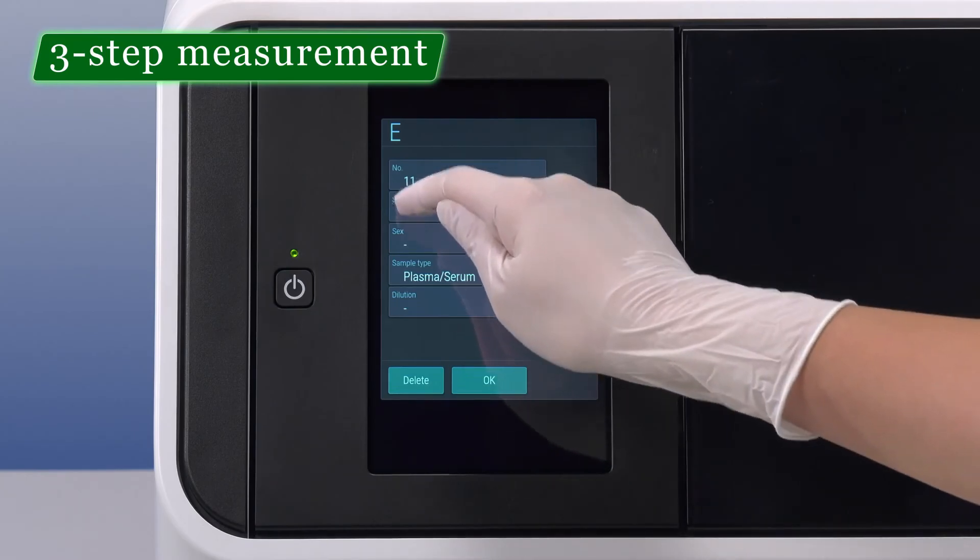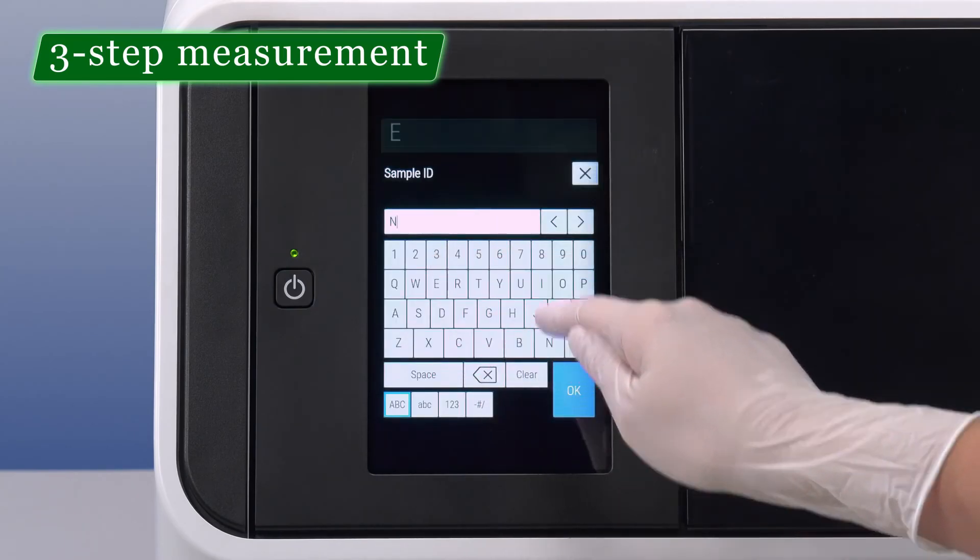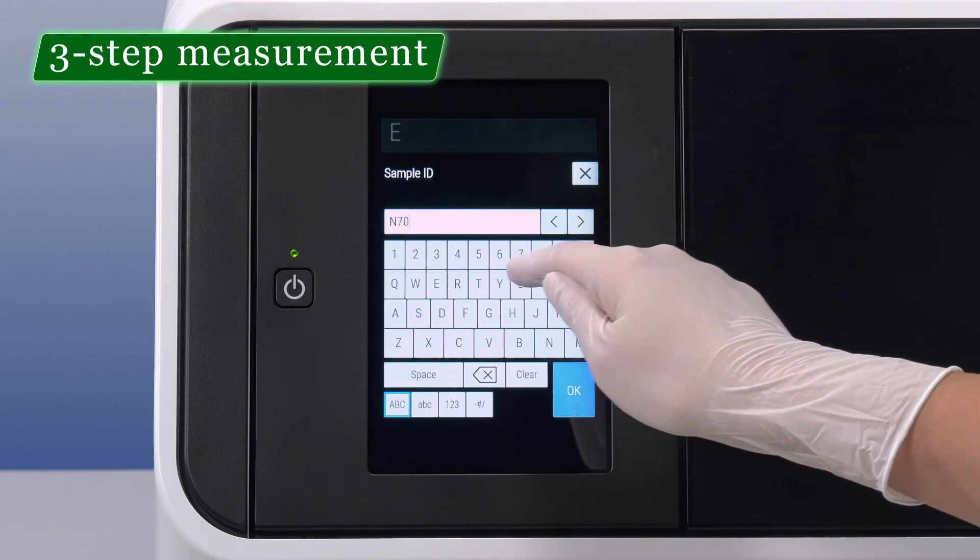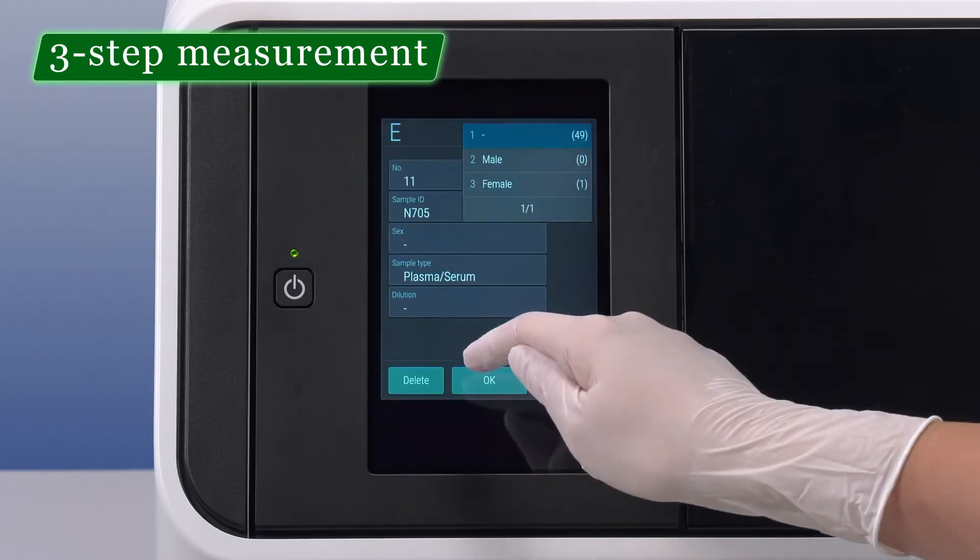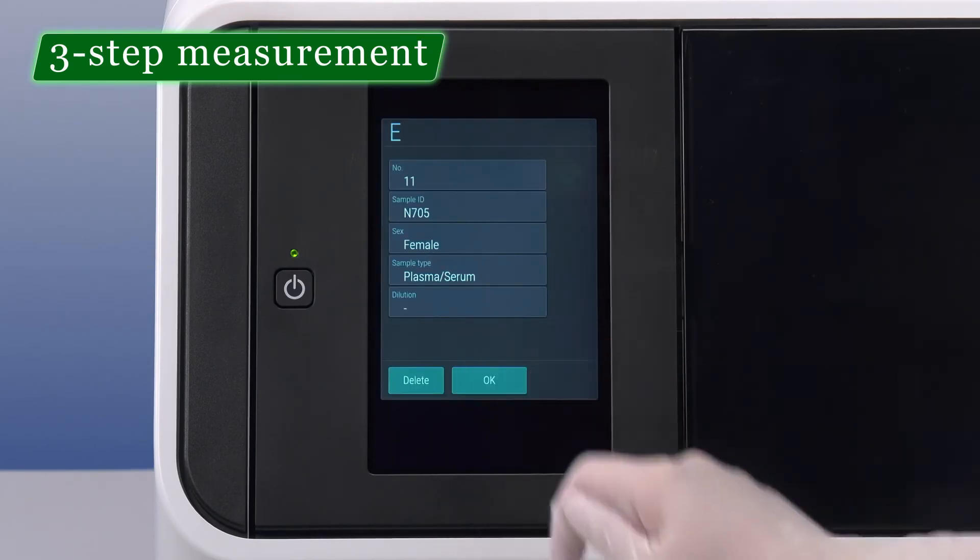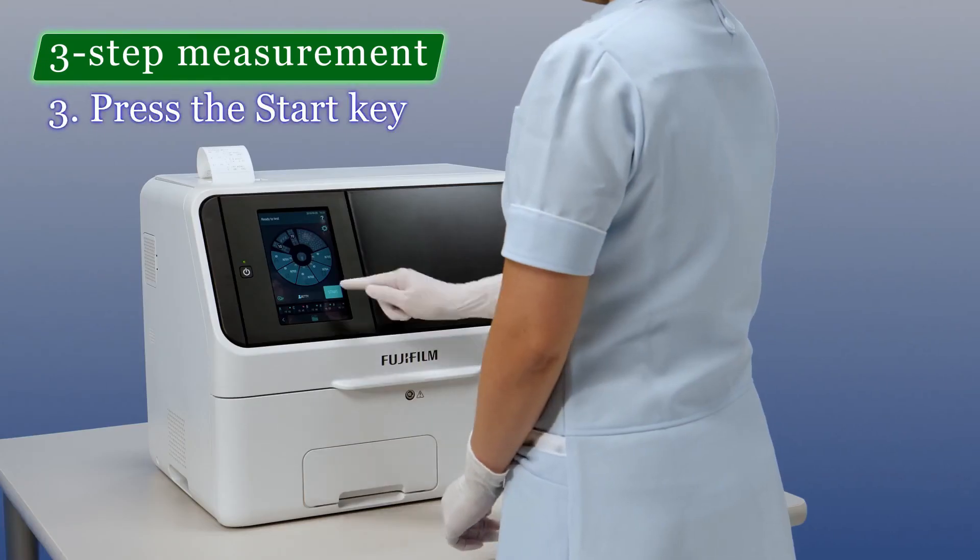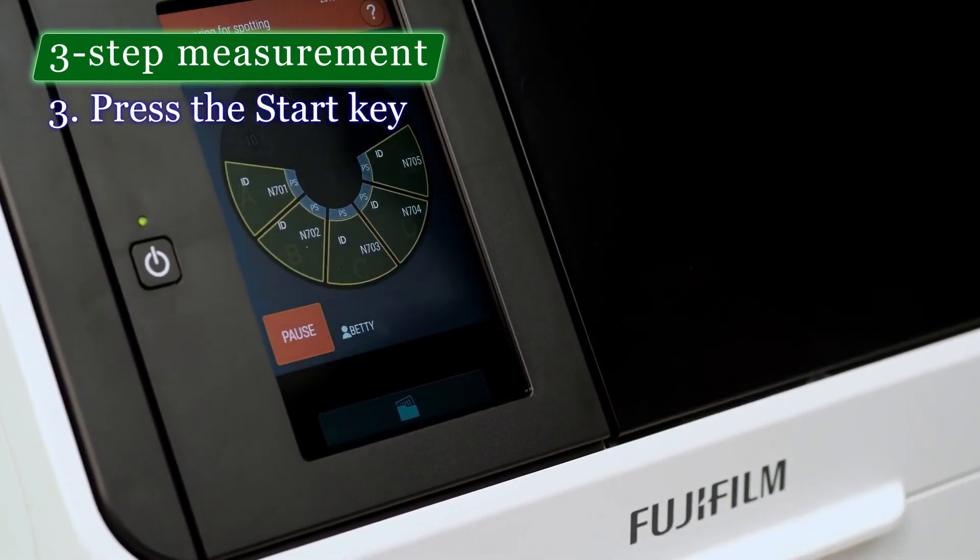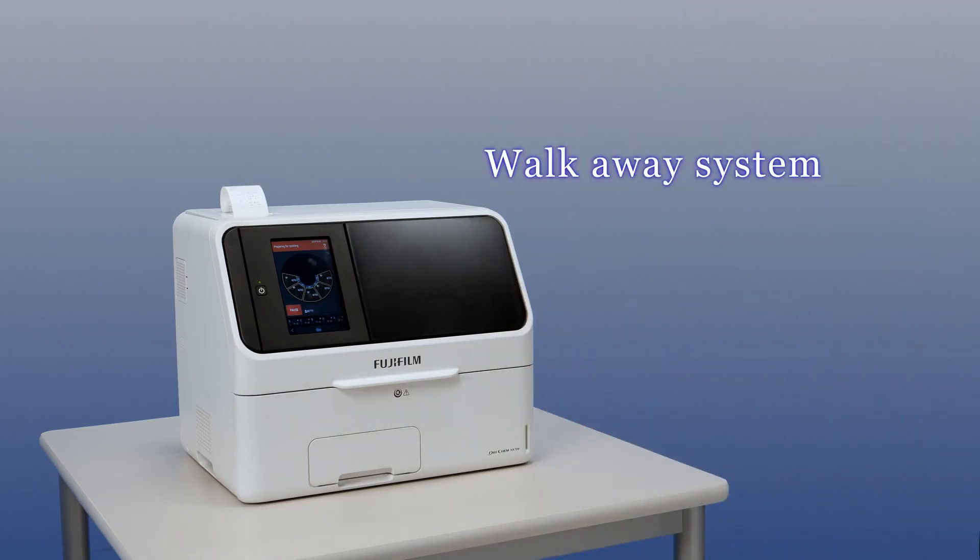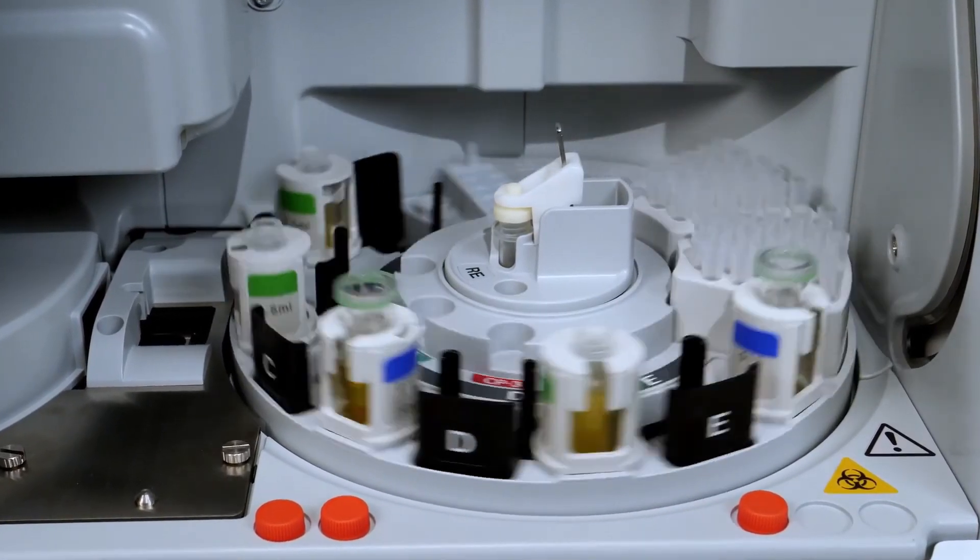However, results differ for certain parameters among dry and conventional chemistry analyzers. Dry chemistry analyzers are compact and easy to operate as these do not require storage space for reagents. There is no need for pipetting of reagents and these are semi to fully automatic and require small volumes of samples.